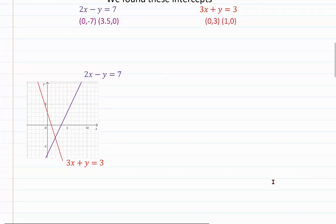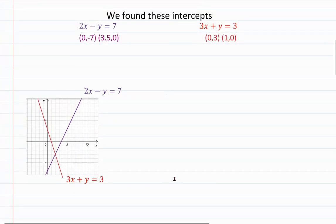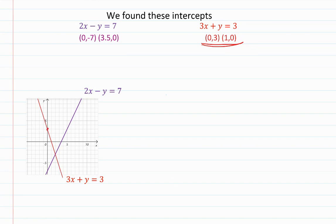When we put these numbers on the graph, for the red equation we plot the point (0, 3) where x equals 0 and y equals 3, and the point (1, 0).